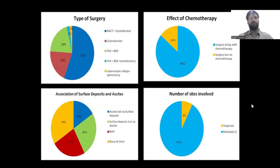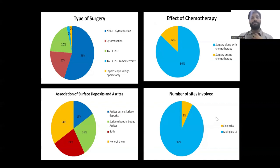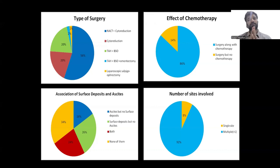Regarding type of surgery, NACT plus cytoreduction was given in 56%, and total hysterectomy with bilateral salpingo-oophorectomy with omentectomy was done in 2%. Effect of chemotherapy combined with surgery was seen in 86% of cases. In 92% of cases, multiple sites were involved — including local, nodal, and peritoneal involvement. Association of surface deposits and ascites: ascites with no surface deposits was seen in 16%, surface deposits but no ascites in 26%, and no deposits with no ascites in 34%.